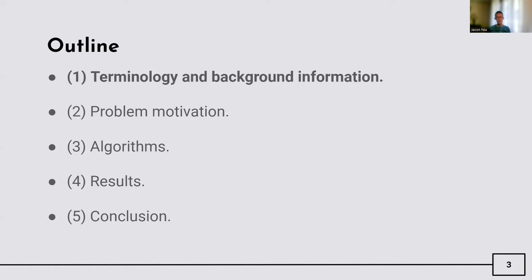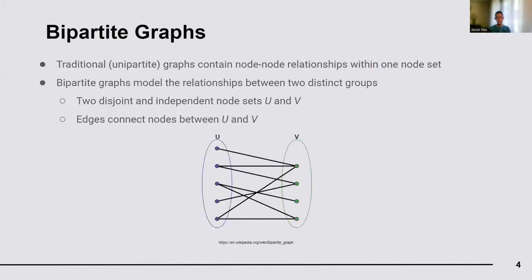Let's begin with some terminology and background information. Graphs contain a collection of nodes and edges such that each edge connects two nodes together. These traditional graphs are unipartite, which means that there is only one node set. Bipartite graphs are different than traditional graphs in that they are two disjoint and independent node sets, hence the word bipartite. Each edge connects a node in one node set to a node in the other node set.